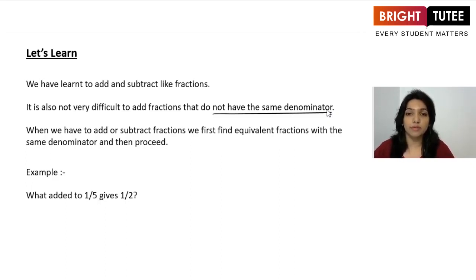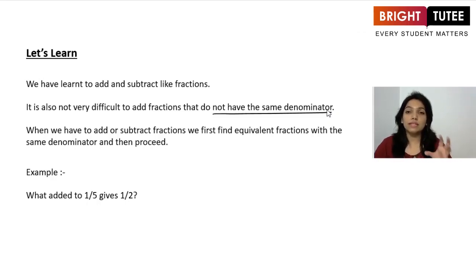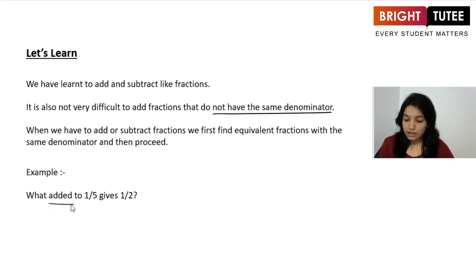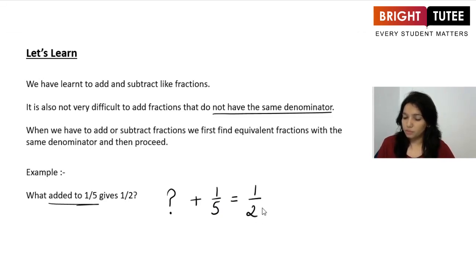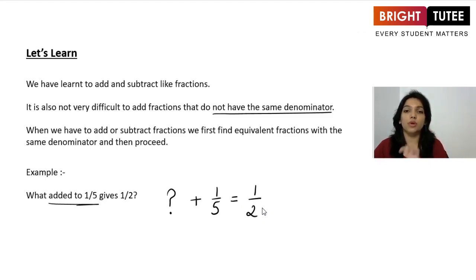Here we are given an example: what added to 1 over 5 gives 1 over 2? First, it's important to understand the question. Is it addition or subtraction? What should be added to 1 over 5 so that we get 1 over 2? I'll put a question mark for that particular number that needs to be added to 1 over 5 to give 1 over 2.